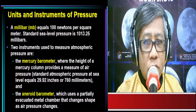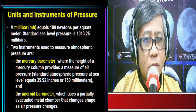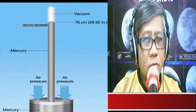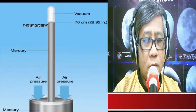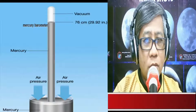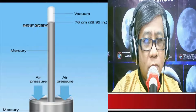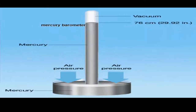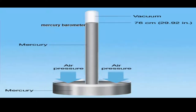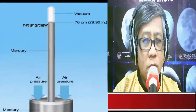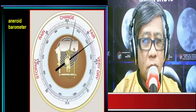The mercurial barometer was invented by an Italian named Evangelista Torricelli. In the mercurial barometer, a reservoir contains mercury. As air presses down on the reservoir, it allows the mercury column inside the tube to rise. The standard height of that mercury column at sea level is 76 centimeters or 29.92 inches.